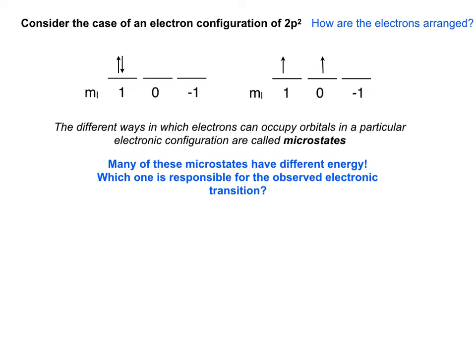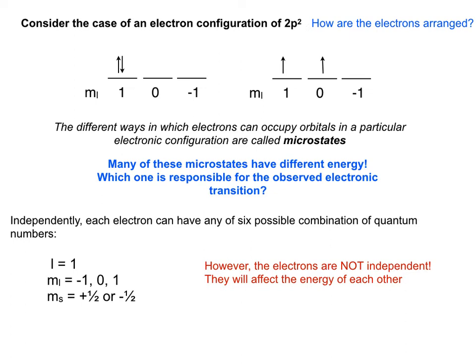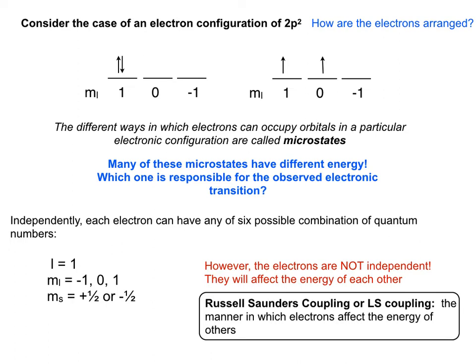Each electron can have six possible quantum state combinations: m_l of -1, 0, or 1, and m_s of +½ or -½. But in an atom, electrons are not independent — the energies of electrons affect each other. This is often called Russell-Sanders coupling, or LS coupling.